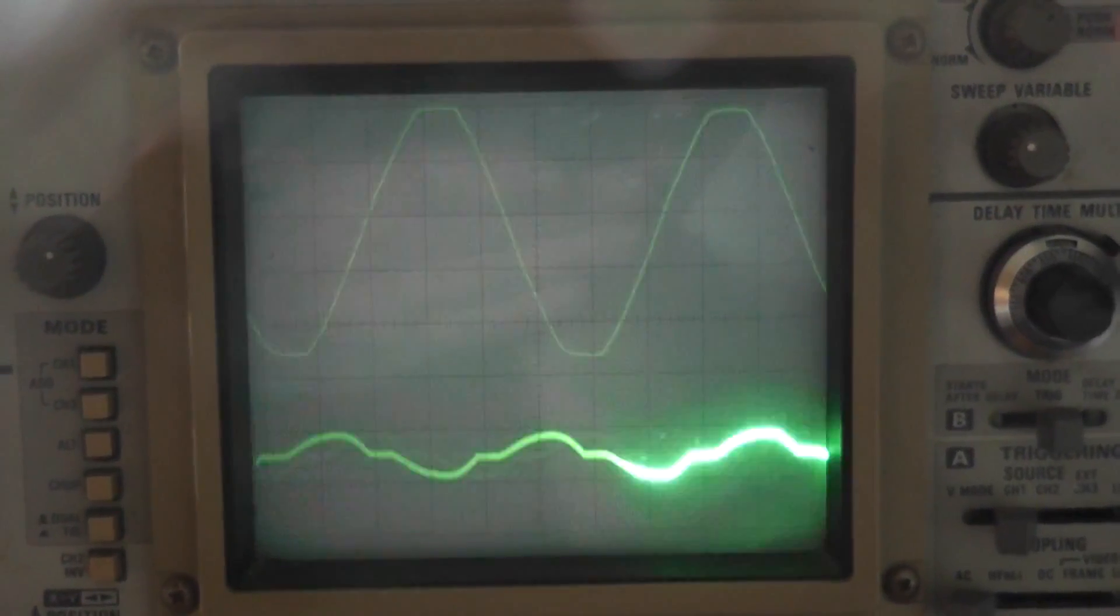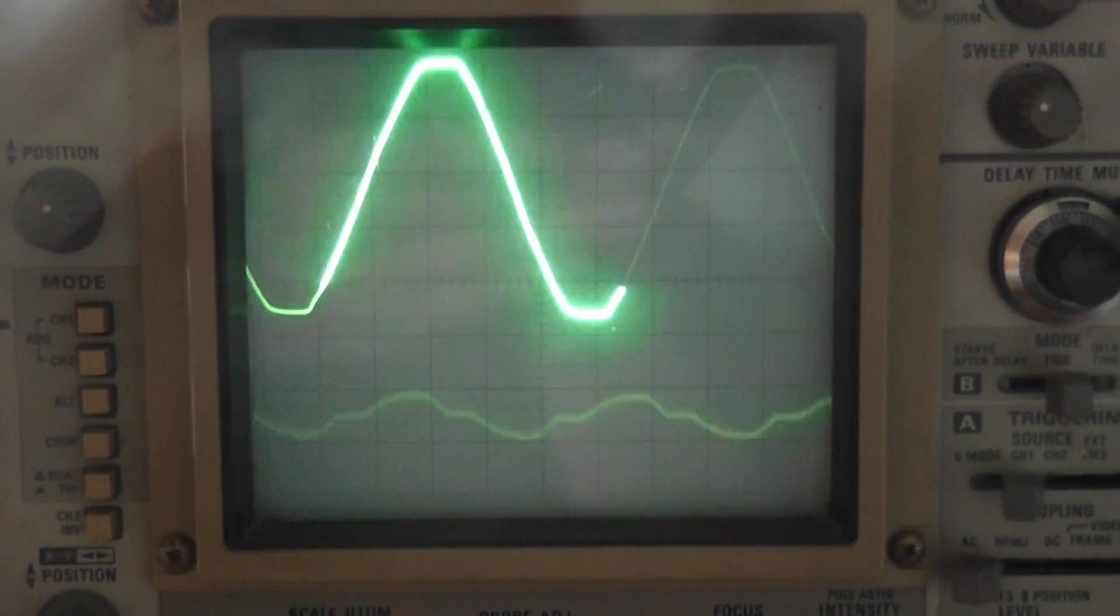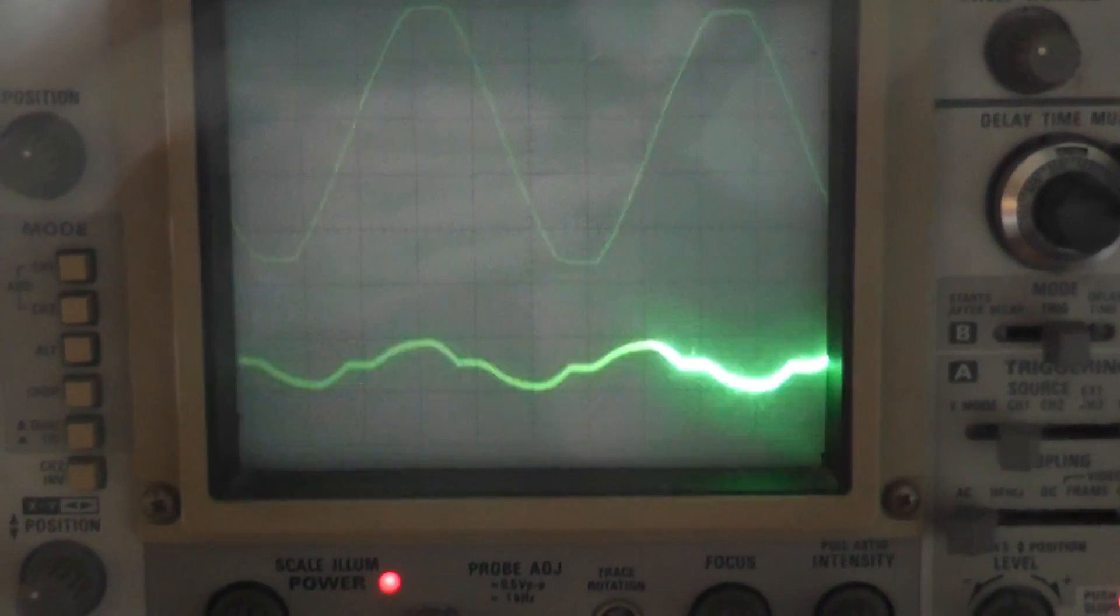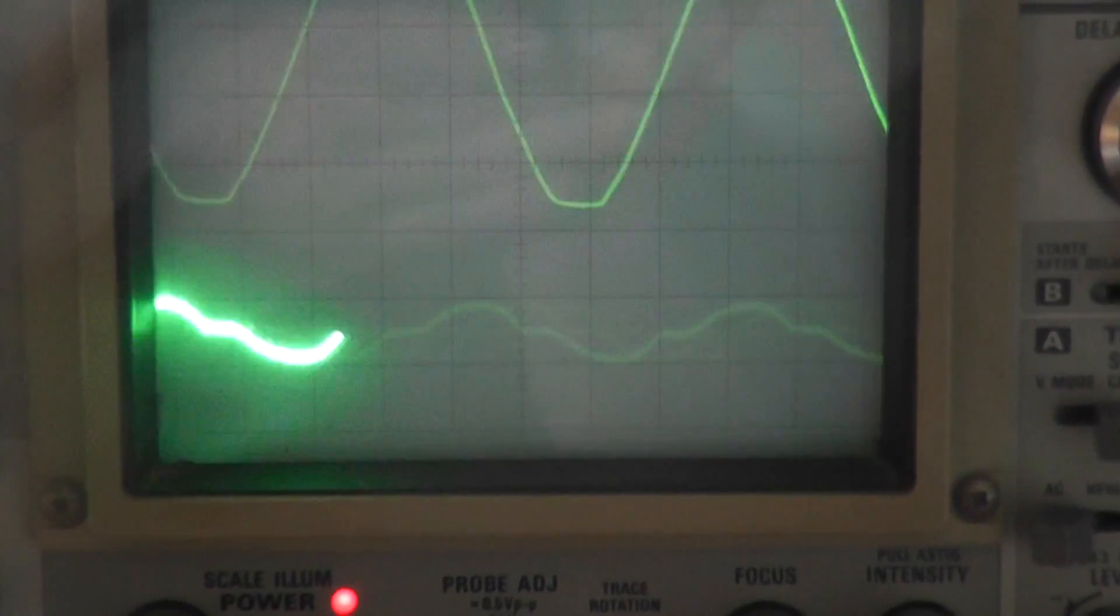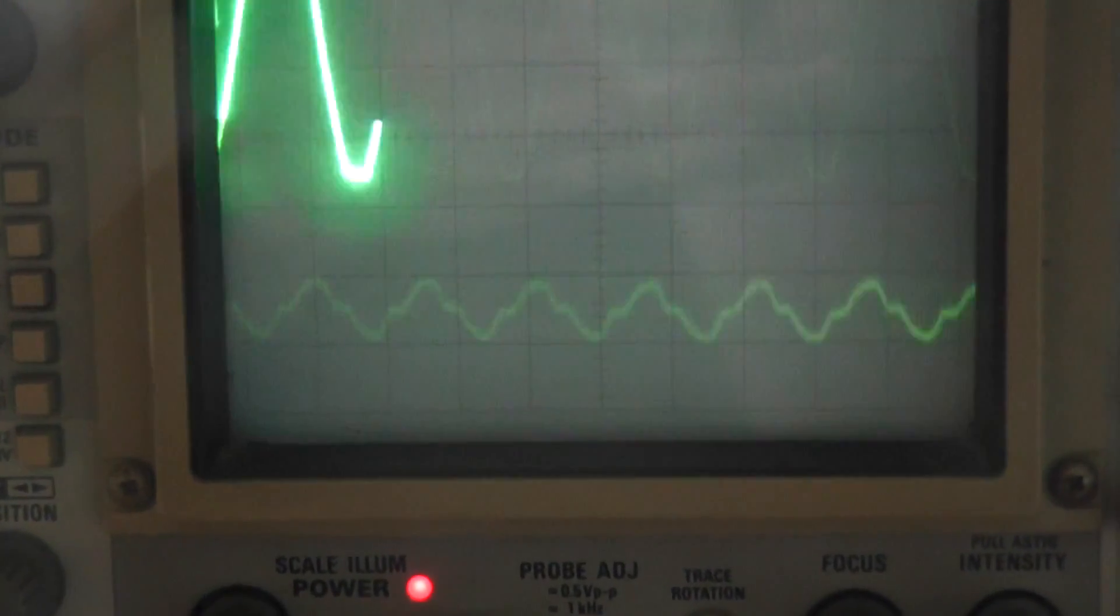The top is the sine wave from the 240 volt AC mains, while the bottom one is the output from the little alternator. There's an interesting ripple. Interesting.